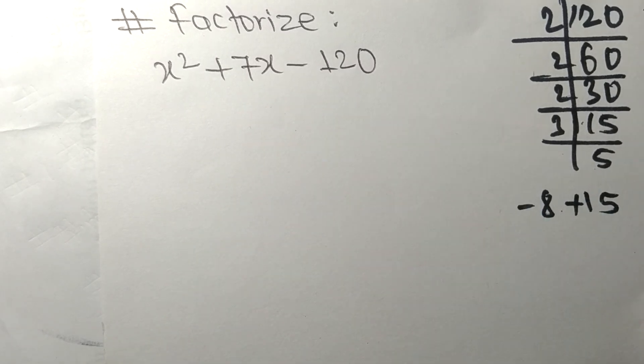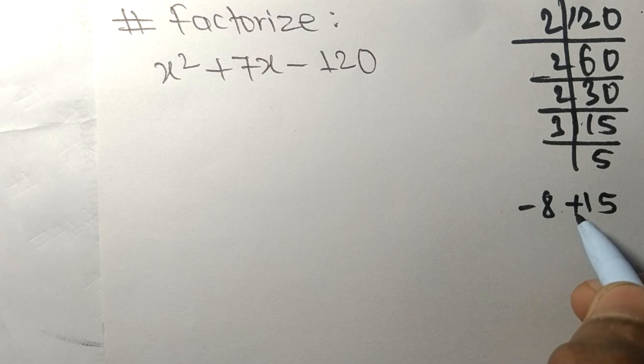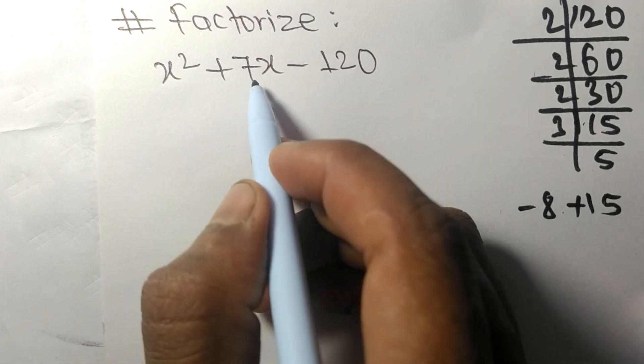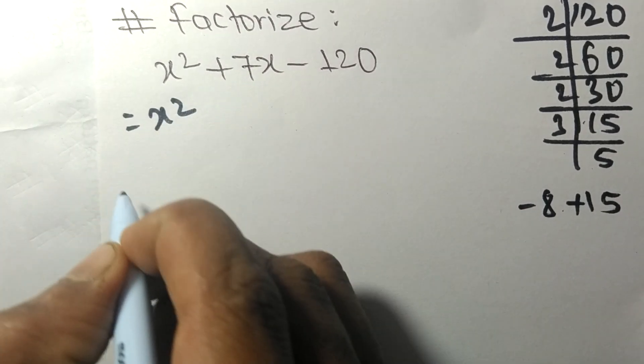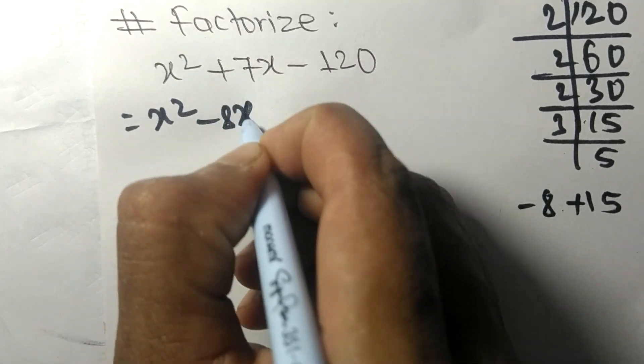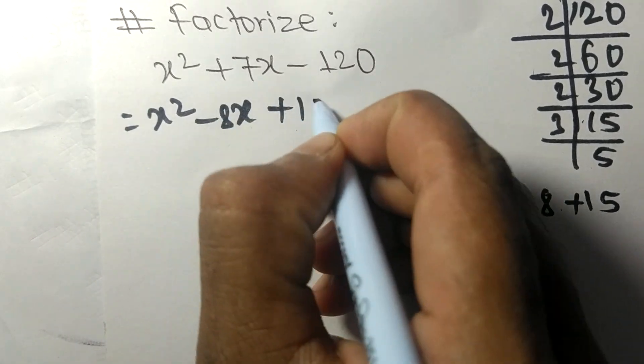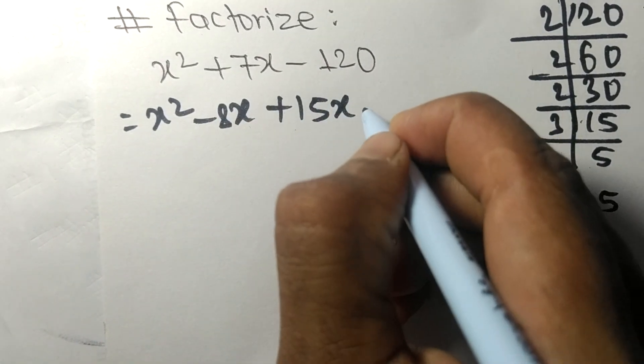Here we need plus 7, so plus 15 minus 8 equals plus 7. It becomes x² - 8x + 15x - 120.